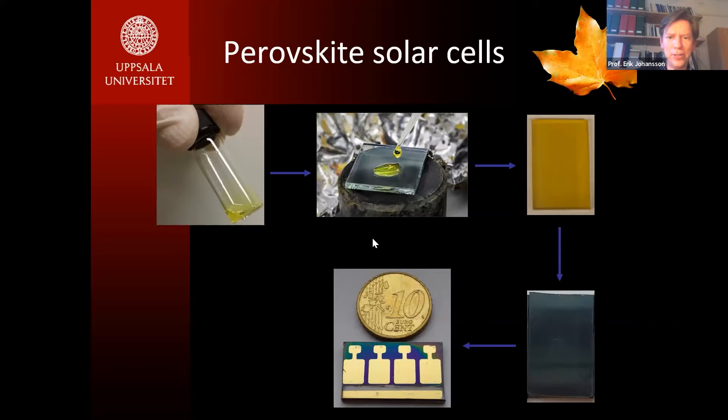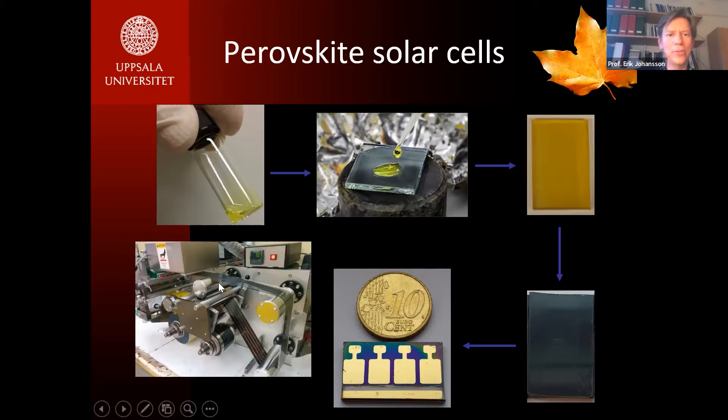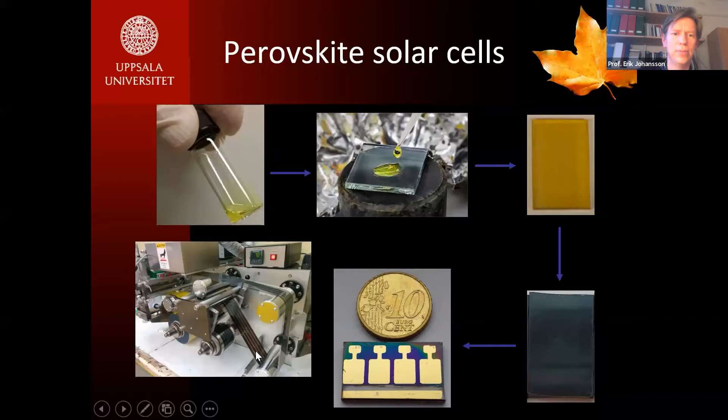After forming the perovskite, we deposit the hole transport material and the gold layer. In our lab, we have this device structure with small solar cells on each sample. We are also aiming towards flexible perovskite solar cells, which is possible with solution-based methods, and I will show some results towards those flexible devices later.